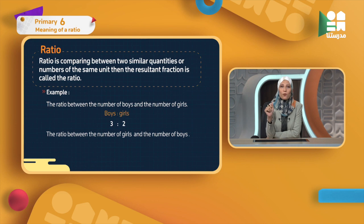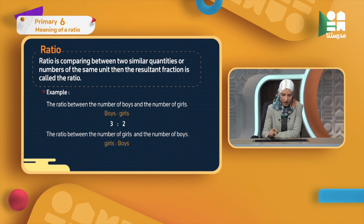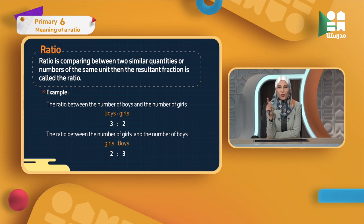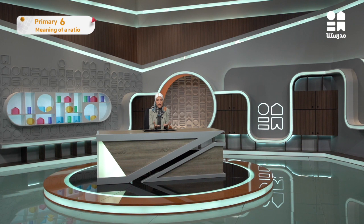Another sentence: the ratio between the number of girls and the number of boys. Here he starts from the girls — he mentioned girls first. So I will start putting girls to boys and write 2 to 3. What does it mean? It means two girls for every three boys. The ratio is comparing between two numbers or two quantities of the same units.